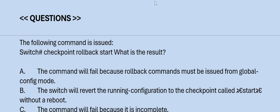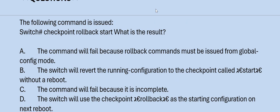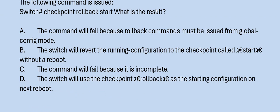Question: The following command is used — please have a look. What is the result? Option A: the command will fail because the rollback command must be issued from global config mode. Option B: the switch will revert the running configuration to the checkpoint shown, without a reboot. Option C: the command will fail because it is incomplete. Option D: the switch will use the checkpoint as the starting configuration on the next reboot. The correct answer is Option B.